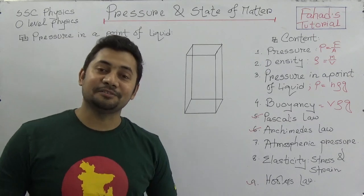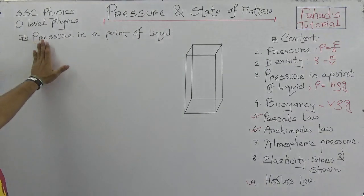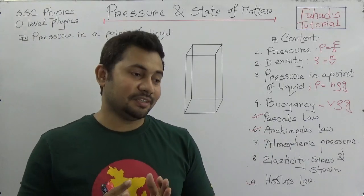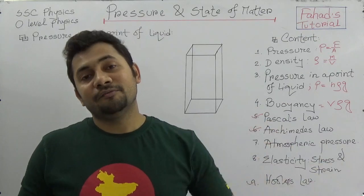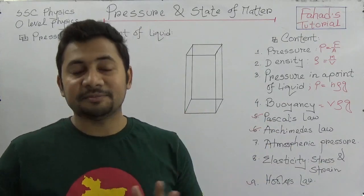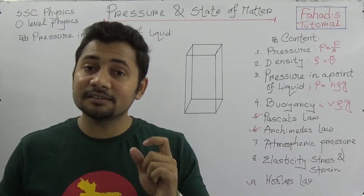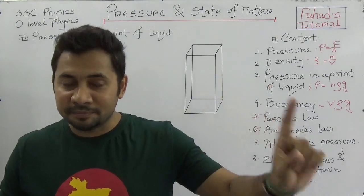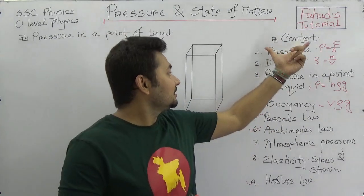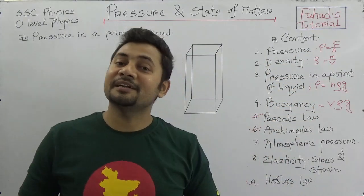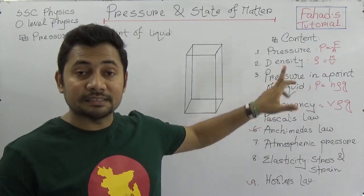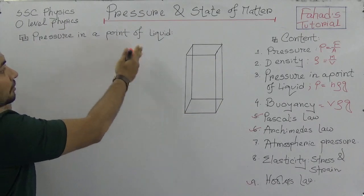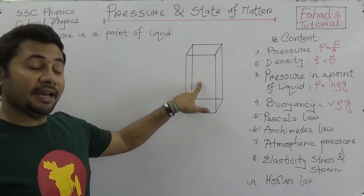This class is about finding the pressure at a point of liquids, which is very important because we need to use these equations further for solving mathematical problems in this chapter. This is the second class of this chapter; I already uploaded a class previously covering the discussed issues and content, including pressure and density. Now we will find how to find the pressure at a point of a liquid.